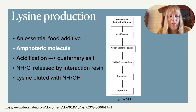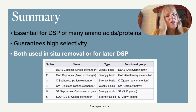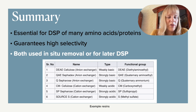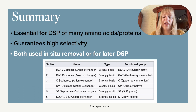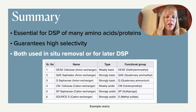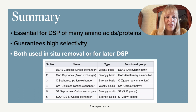Separating based on charges is very specific, unlike separating based on size alone. This downstream processing using cation or anion exchange chromatography is essential in the production and processing of many amino acids and proteins — because many of them are charged. For instance, viruses and DNA are negatively charged, making them relatively easy to remove when working with recombinant viruses. Ion exchange chromatography guarantees very high selectivity and can be used in different ways within downstream processing.